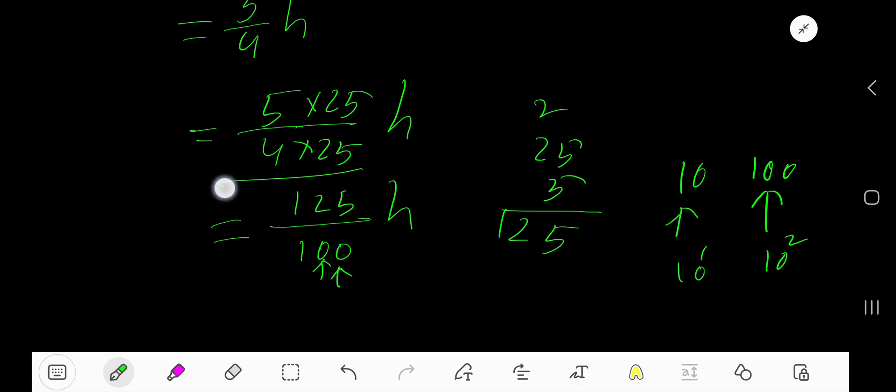Move the decimal from right to left equal to the number of zeros. So the decimal point will appear here, then one place, two places. So 1.25 hours is the answer. Thank you.